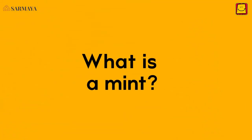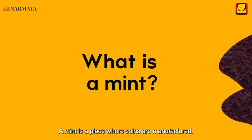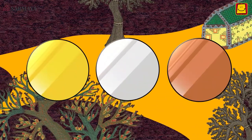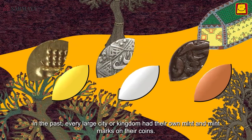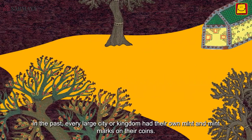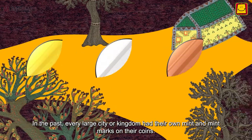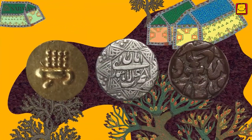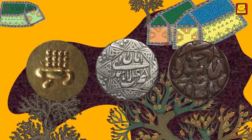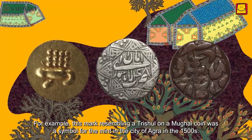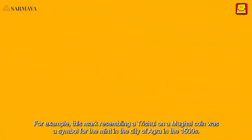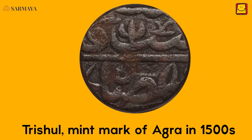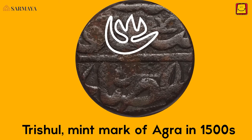A mint is a place where coins are manufactured. In the past, every large city or kingdom had their own mint and mint marks on their coins. For example, this mark resembling the Trishul on a Mughal coin was a symbol for the mint in the city of Agra in the 1500s.